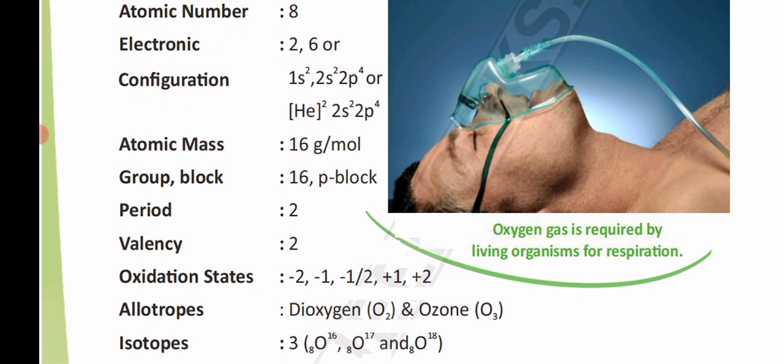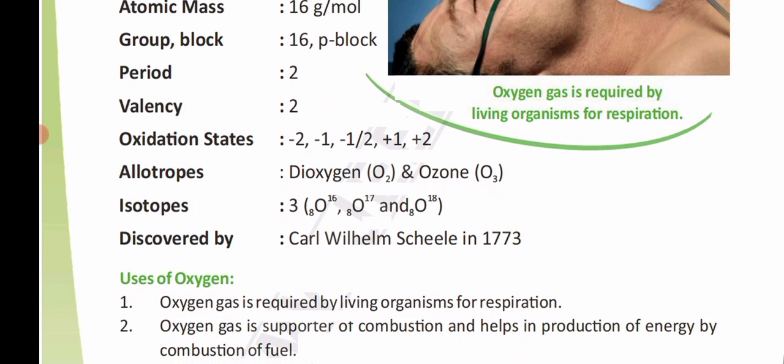Oxygen has two electrons in its outermost shell. It has three isotopes — isotopes are substances which have the same atomic number but different mass numbers. Oxygen has three isotopes. Oxygen was discovered by Carl Wilhelm Scheele in 1773.